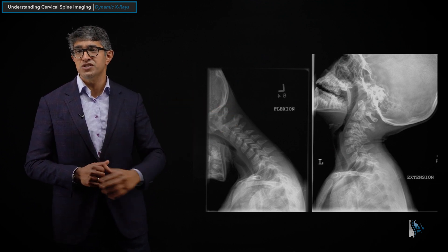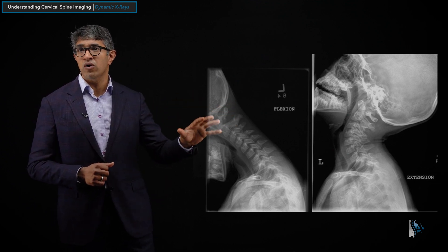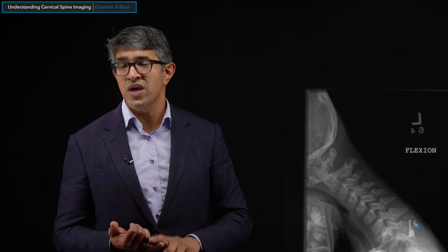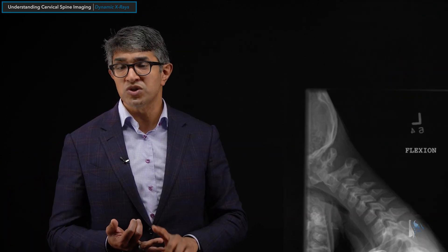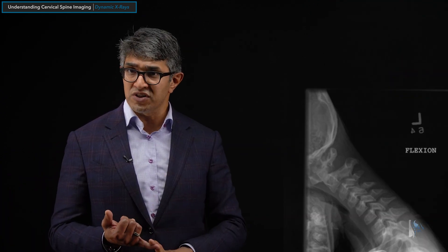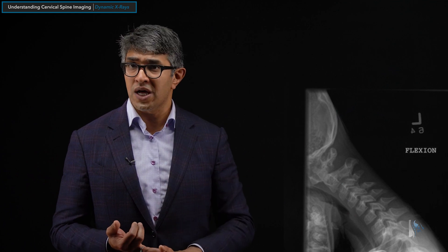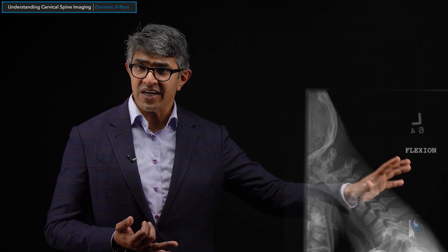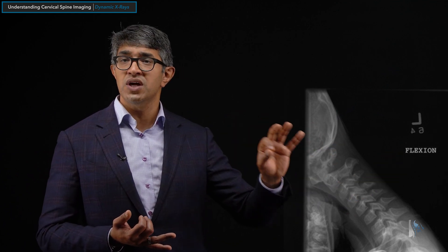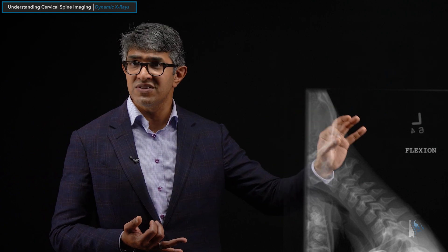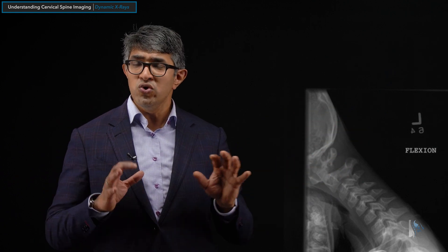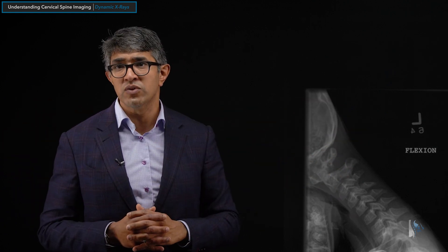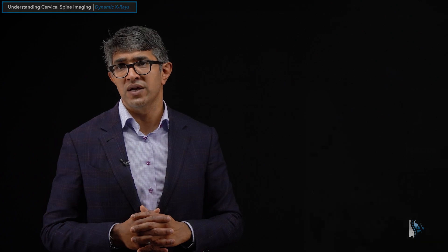You have to get dynamic imaging, and that is the power of dynamic x-rays. So between an MRI and a CAT scan — which show you the soft tissue anatomy and the bony anatomy really well — and dynamic x-rays, which show you the range of motion and exclude any kind of instability, you can really paint a very full picture of what's happening with the cervical spine.